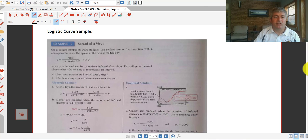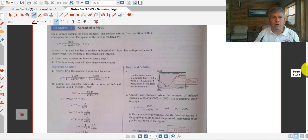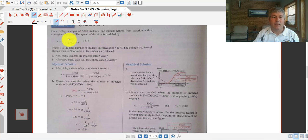So we have a logistics curve sample here which talks about the spread of a virus on a college campus. We've got a college campus of 5,000 students, and one student returns from vacation with a contagious flu virus, and the spread is modeled by this particular function. Our 5,000 would be our total campus, and then our function listed below, or y is the total number of students infected after t days. Now the college will cancel classes when 40% or more of the students are infected.